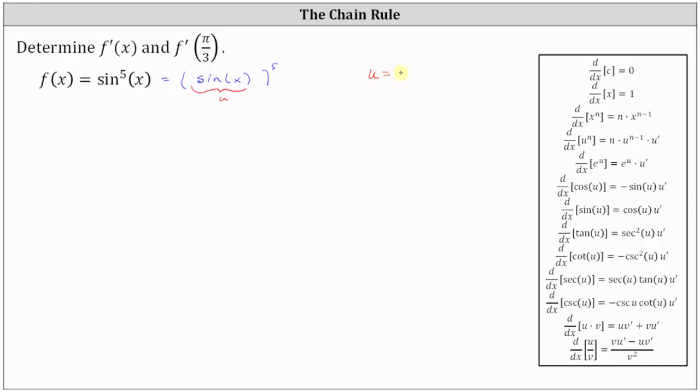So if we let u equal sine x, when applying the chain rule, we will need to determine u prime or du dx, which is equal to the derivative of sine x with respect to x, which is cosine x.